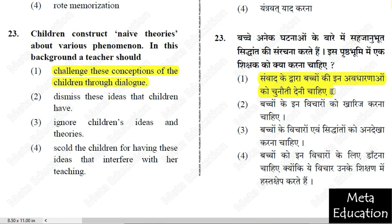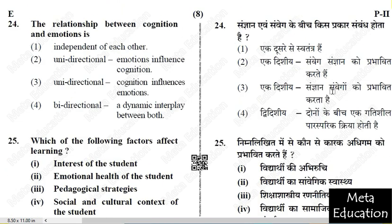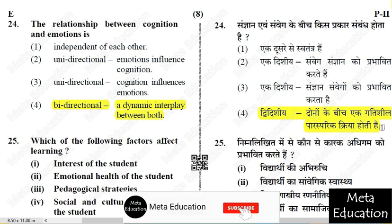Question 24: The relationship between cognition and emotion is — the correct answer involves dynamic interplay. Cognition and emotion are in a dynamic interplay with each other.